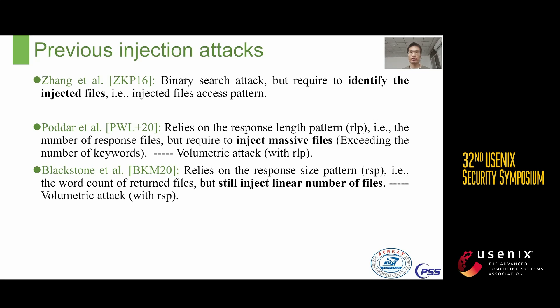Based on the attack model, we reviewed previous injection attacks. The first is the file injection attack by ZKB et al. in 2016. Given n keywords, ZKB16 requires O(log n) injected files to ensure each keyword corresponds to different injected files, so the adversary can restore the query based on the identifier of the injected file returned. However, since ZKB16 needs to identify the injected file, it is difficult in practice because the client may encrypt the injected file, and it is also hard to bypass countermeasures such as ORAM, PIR, and other access pattern hiding strategies.